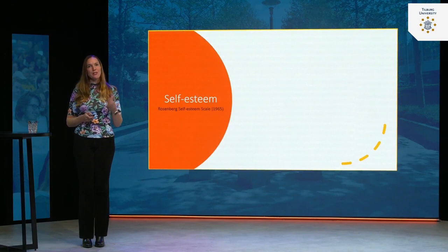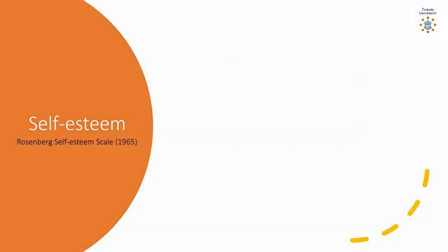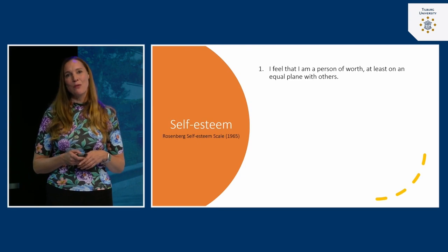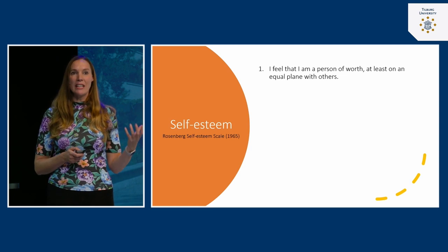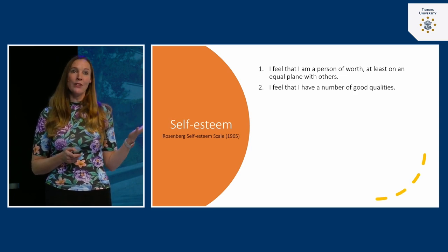If you're curious about your own level of self-esteem, you could complete the very famous and widely used Rosenberg Self-Esteem Scale, which was developed in 1965 but is still used today — I use it in my own research to get a sense of people's level of self-esteem. The first item is: 'I feel that I'm a person of worth, at least on an equal level with others.'